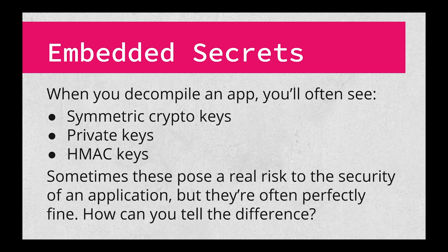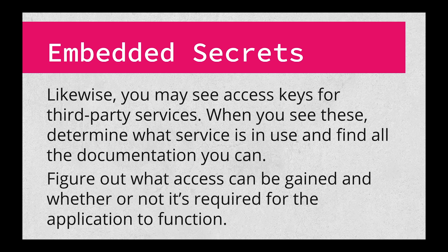Rather, you need to work through the code and determine what it's actually being used for. If a hardcoded key is being used to send data over an insecure channel, for instance, that would certainly be a security issue because anyone who pulls out the key could decrypt it. Embedded secrets for third-party services are similar — sometimes they're an issue and sometimes they're perfectly fine. When you see what looks like a third-party secret, work out where and how it's being used, then refer to any documentation you can find on that service. Once you have that, you can determine whether or not the secret is necessary for the application.